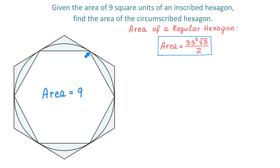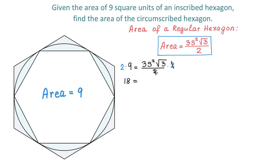First I will find one side of this inscribed hexagon. We replace area with 9, giving us 9 equals 3s squared times square root of 3 over 2. We multiply both sides by 2 to eliminate the denominator. On the left side 2 times 9 is 18, and on the right side the 2s cancel, leaving 3s squared times square root of 3.